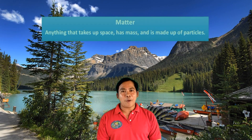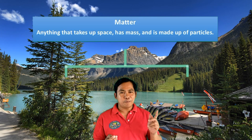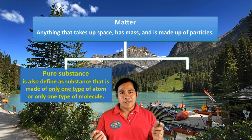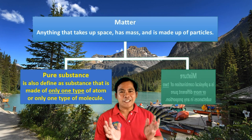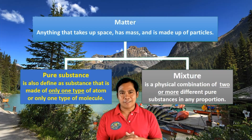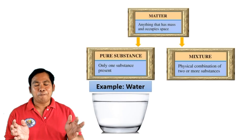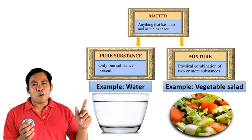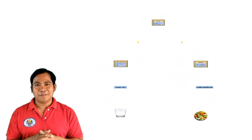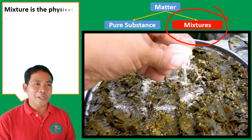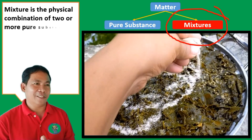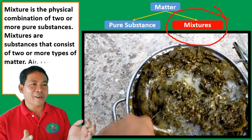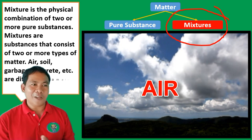Matter is anything that occupies space and has mass. There are two types of matter: the pure substance, which is made of only one type of material, and the mixture, which is a physical combination of two or more substances. An example of a pure substance is water, and an example of a mixture is vegetable salad. Mixtures consist of two or more types of matter — air, soil, garbage, and concrete are different examples of mixtures.